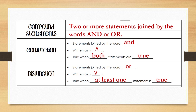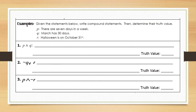For example, if you have true or false, that would be a true statement. Consider these three statements: p — 'there are seven days in a week' (true); q — 'March has 30 days' (false, because March actually has 31 days); and r — 'Halloween is on October 31st.'